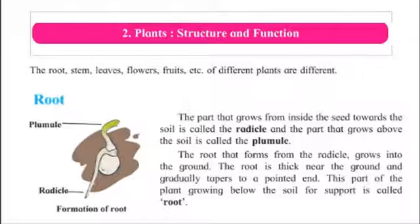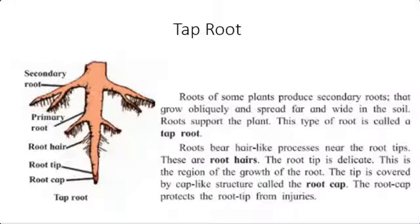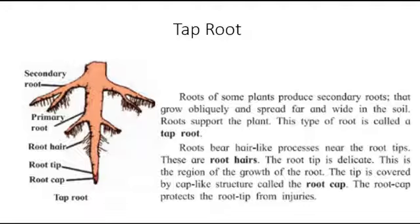The part that grows above the soil is called the plumule. The root that forms from the radicle grows into the ground. The root is thick near the ground and gradually tapers to a pointed end. This part of the plant growing below the soil for support is called the root. Roots of some plants produce secondary roots that grow obliquely and spread far and wide in the soil. This type of root is called a tap root.